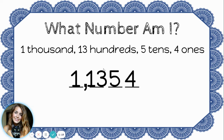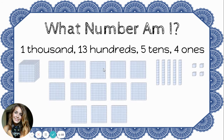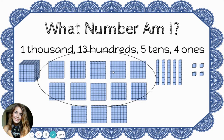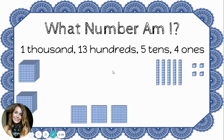Let's use base ten blocks to help us figure out what number this actually is. If I were to make this number with blocks, it would look like this. I have one thousand block, thirteen hundreds blocks, five tens blocks, and four ones blocks. I can't fit thirteen hundreds into the hundreds place, because there's really a thousand hiding with these hundreds. Remember that once you get up to ten hundreds, that's actually another group of a thousand. So let's bundle those ten hundreds together to make another thousand. Now I have two thousands, three hundreds, five tens, and four ones. That number is two thousand three hundred fifty-four.